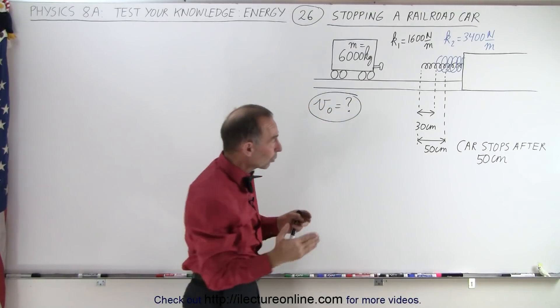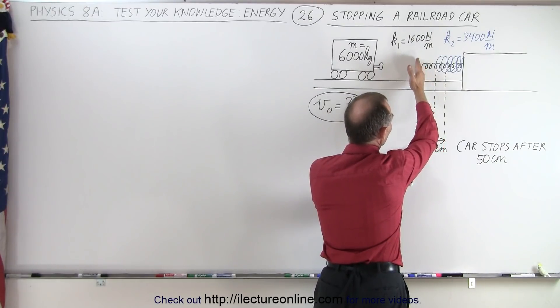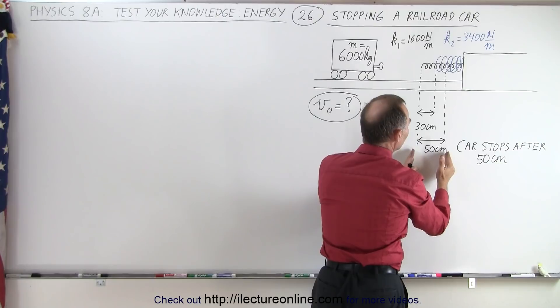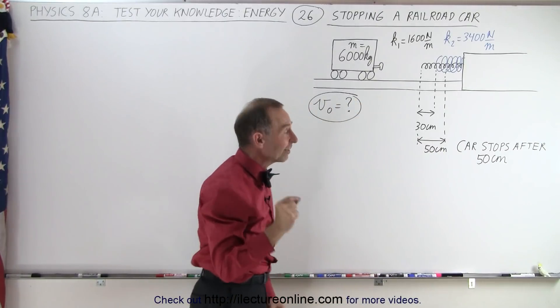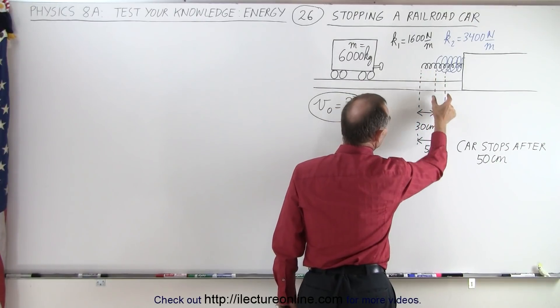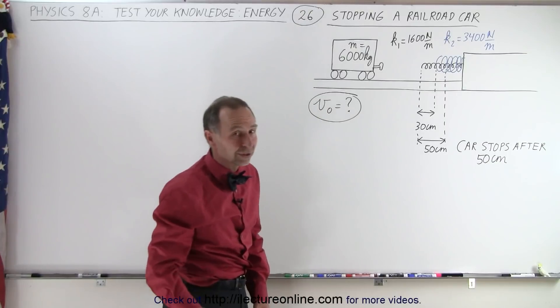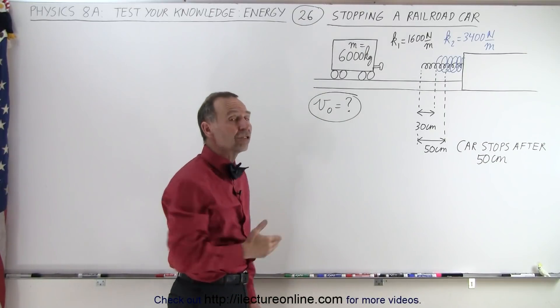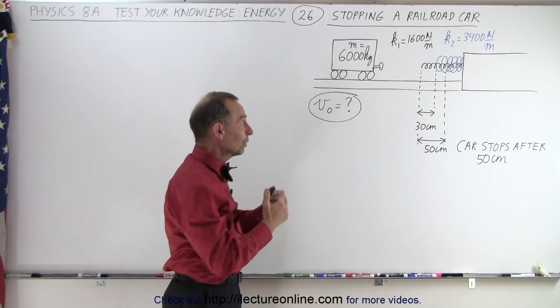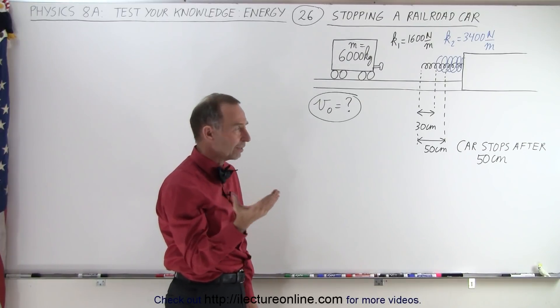The car comes to a complete stop after making contact with the first spring. It completely stops 50 centimeters later, which means the small spring gets compressed 50 centimeters and the big spring gets compressed 20 centimeters. The question is: what was the initial velocity of the car so that it will stop after 50 centimeters? How do we do that?